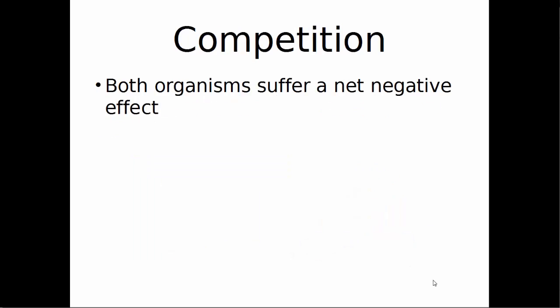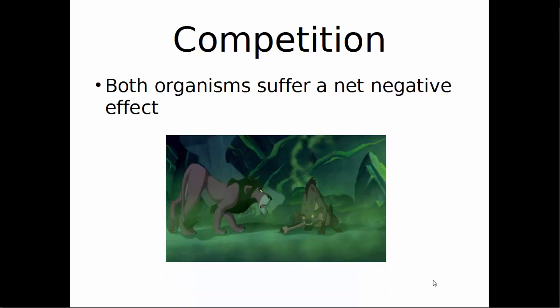Another type of relationship within communities is competition, where both organisms suffer a net negative effect. When species compete for resources, you will often see one species either move to a different community or die out. For example, lions and hyenas both prey on the same large game, so you won't see them living together for very long because there isn't enough prey to sustain both populations in the same community.